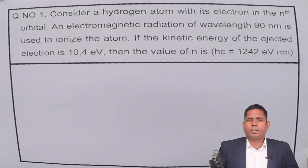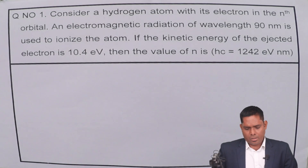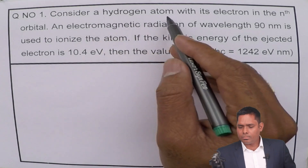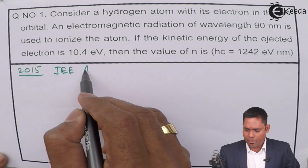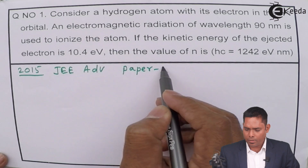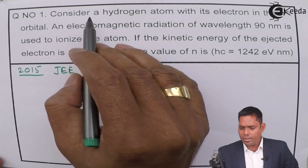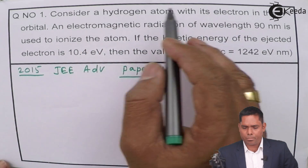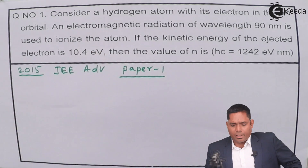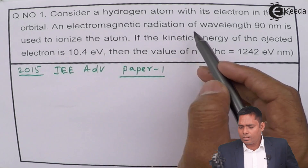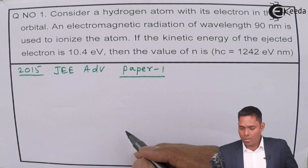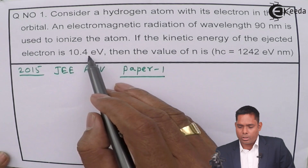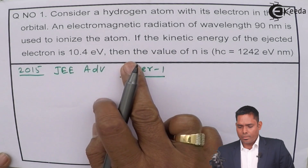Let us begin with question number 1 of JEE Advanced Physics Paper 1, 2015. The first question says: consider a hydrogen atom with its electron in the nth orbit. An electromagnetic radiation of wavelength 90 nanometers is used to ionize the atom. If the kinetic energy of the ejected electron is 10.4 electron volts, then find the value of n.